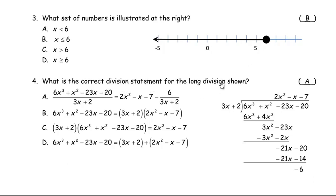For question number four: what is the correct division statement for the long division shown? Answer a is correct. The polynomial 6x cubed plus x squared minus 23x minus 20 is divided by 3x plus 2, giving a quotient of 2x squared minus x minus 7 with a remainder of negative 6. So the division statement shows the polynomial divided by 3x plus 2 equals the quotient, with the remainder negative 6 written over 3x plus 2.